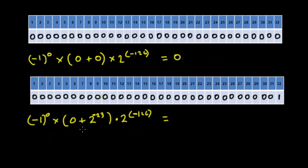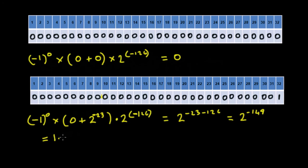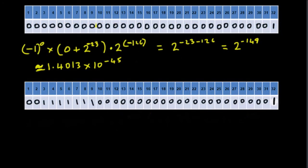This number is going to be minus 1 to the zero (which is 1) times 2 to the minus 23, multiplied by 2 to the minus 126. Adding the exponents: minus 23 plus minus 126 gives us 2 to the minus 149. In decimal that's approximately equal to 1.4013 times 10 to the minus 45. So the smallest number we can represent using the subnormal form is 2 to the minus 149, approximately 1.4013 times 10 to the minus 45.